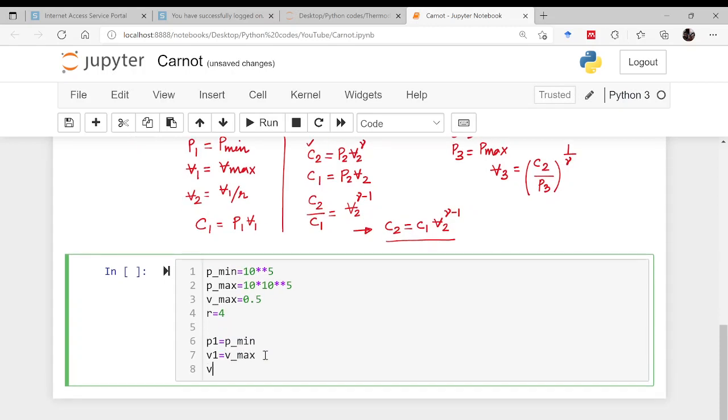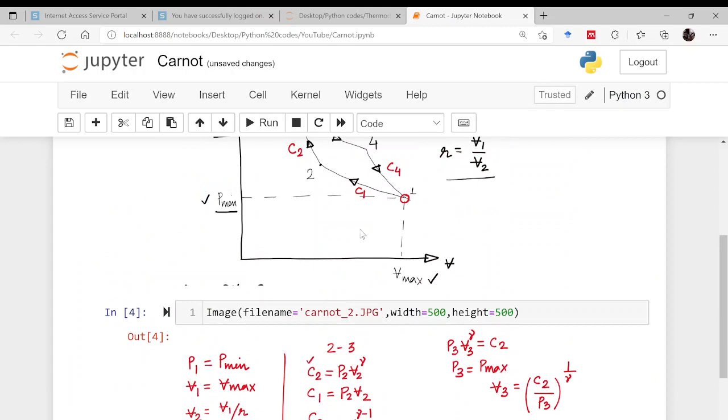Let us say that the minimum pressure is 10 to the power 5. The maximum pressure, let us say it is 10 times this, that is 10 into 10 to the power 5. The maximum volume is let us say 0.5 meter cube and the compression ratio is 4.